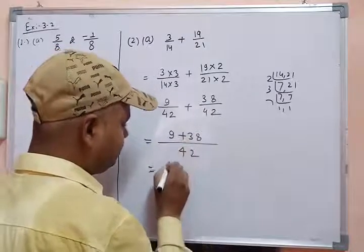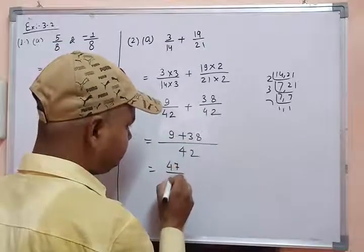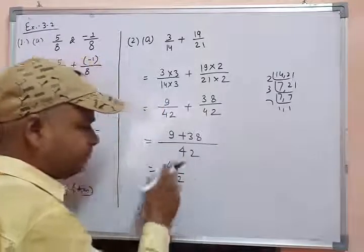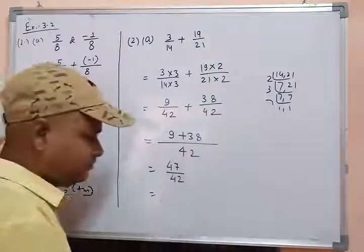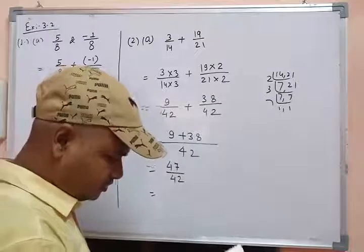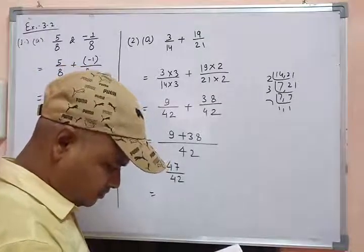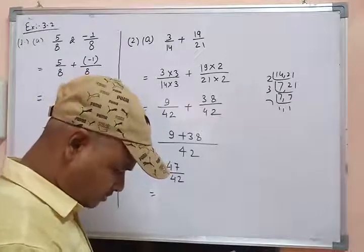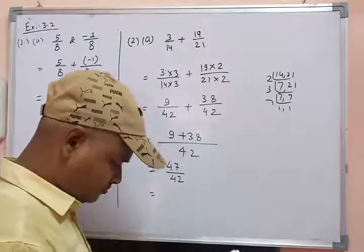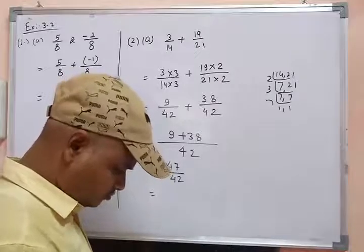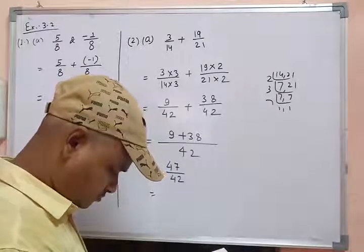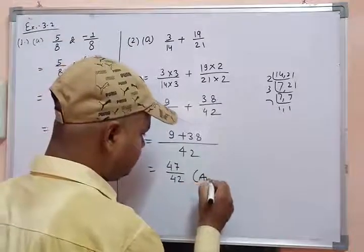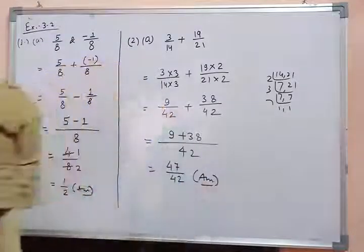Now adding the numerators: 38 and 9 gives 47. So the answer is 47 upon 42. This is the final answer, so no further simplification is needed for this question.